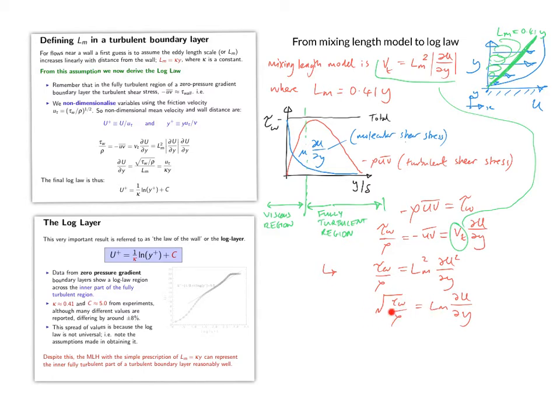And interestingly, this term has the dimensions of a velocity, as we show here. So this is the dimensions of the shear stress, this is the dimensions of the density. You compute that, and you find that you have a velocity. And we call this the friction velocity.